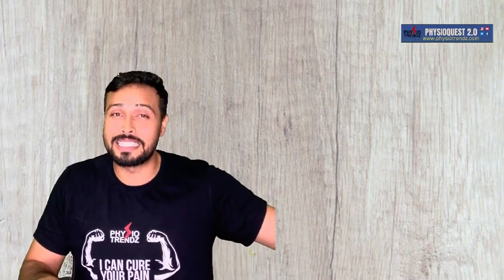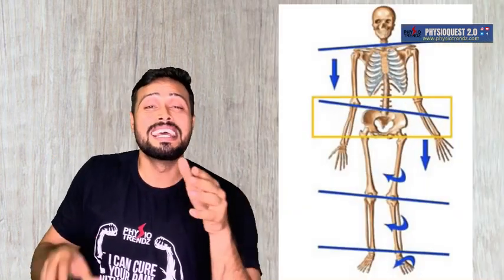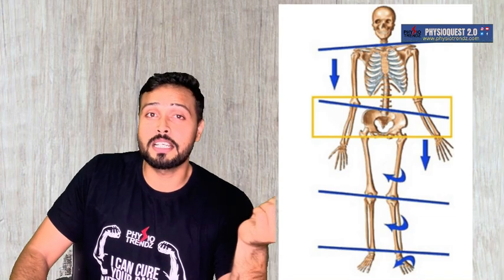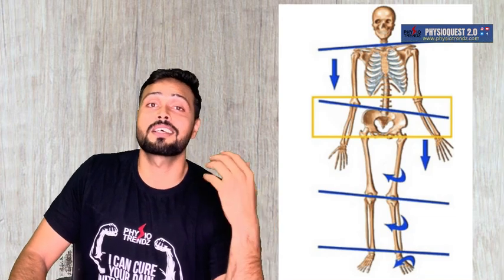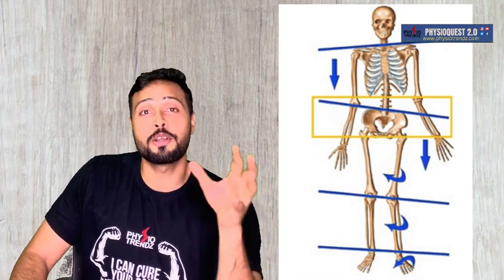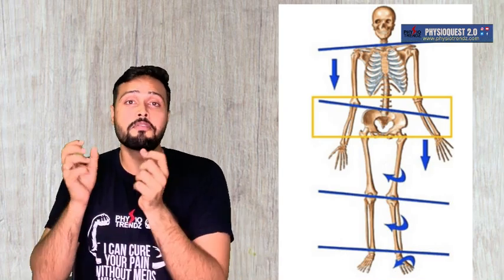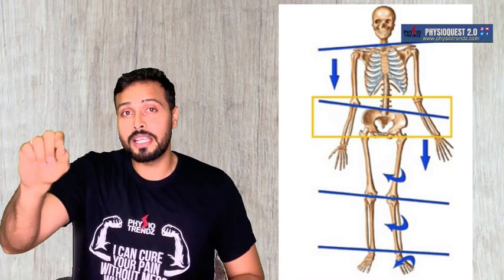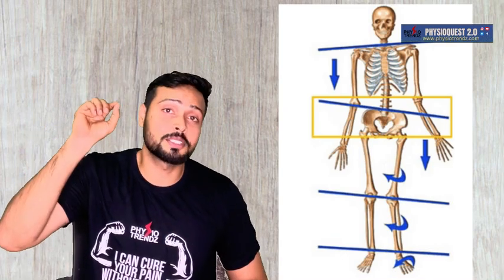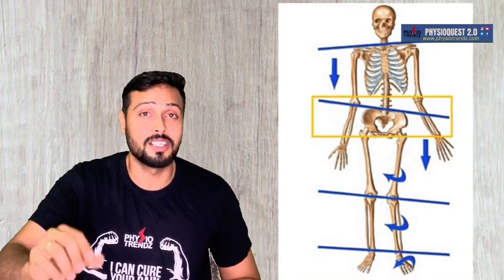Now let's see what option B has to say. Option B says to reduce the peak rise of the pelvis. This makes more sense, because lateral pelvic tilt means the hip abductors on the opposite side are weak, and because of that this finding can occur. To control this, the therapist wants to look into this option.